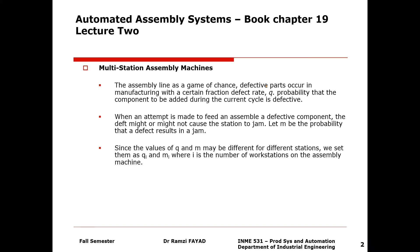Defective parts occur in a manufacturing line with a certain defective rate q. This is the probability that a component coming from the hopper, through the parts feeder, selector, and escapement, is defective. When an attempt is made to fill an assembly with a defective component, the defective part may or may not cause a jam. We let m be the probability that a defective component results in a jam.